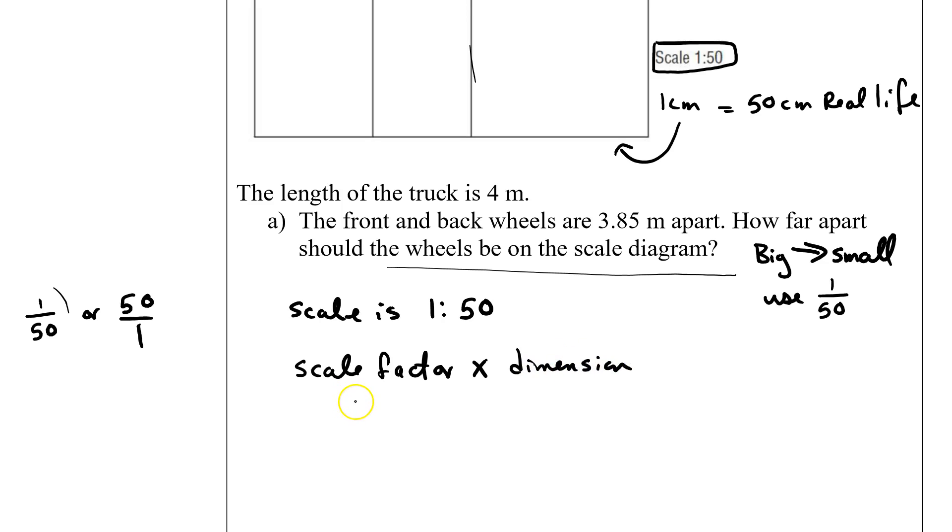So we would take our scale factor, 1 over 50, and we would times it by our dimension here, which is 3.85 meters. When I do that, I get the final answer of 0.077 meters.